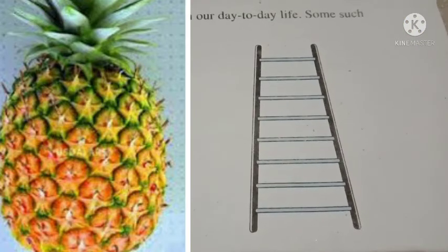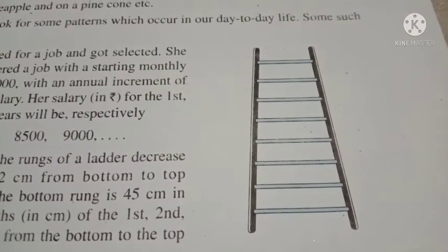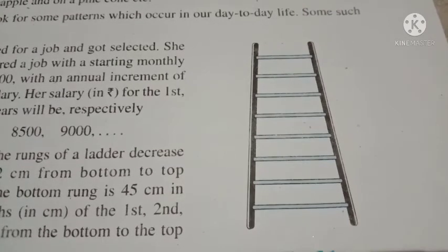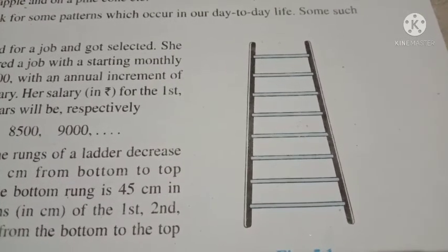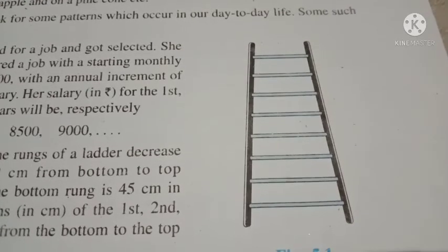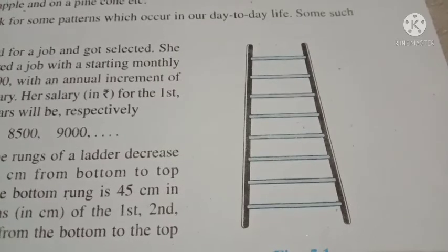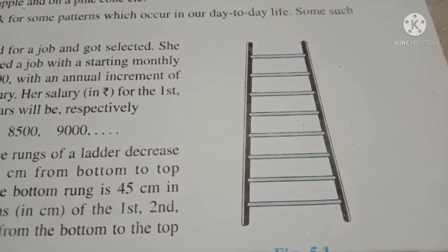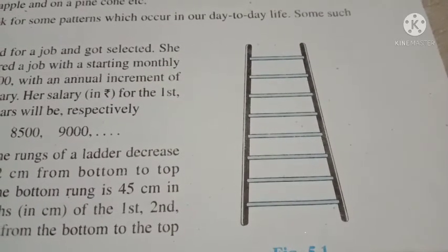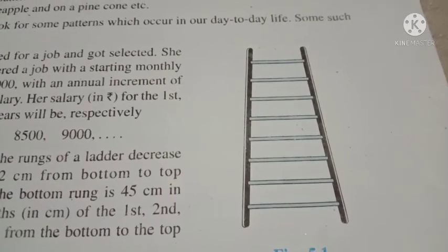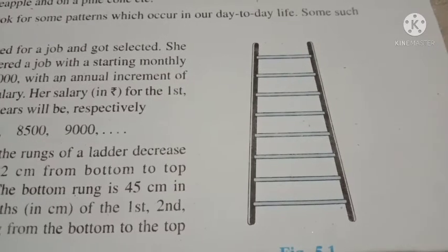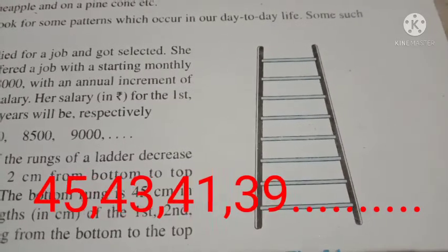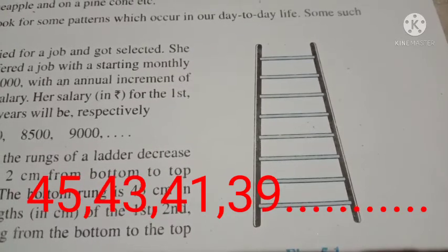For example, look at this figure. The length of the rungs of this ladder decrease uniformly by 2 cm from bottom to top. The bottom rung is 45 cm in length. So what is the length of the next rung? It is 43. What is the length of the next rung? It is 41. So from bottom to top, the lengths of the rungs of this ladder are 45 cm, 43 cm, 41 cm, 39 cm, etc.